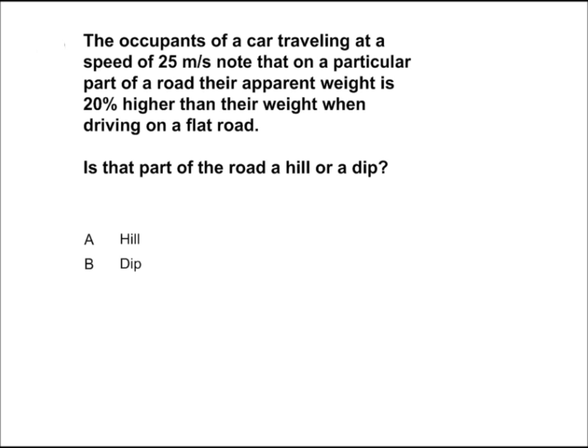We want to know if this part of the road is a hill or a dip. We know that if we drive over a hill, our apparent weight will be less than our normal weight. We also know that if we drive through a dip, our apparent weight will be more than our normal weight. Therefore, the only possible situation is that the car is driving through a dip. So B is the correct answer.